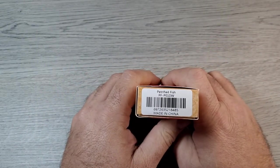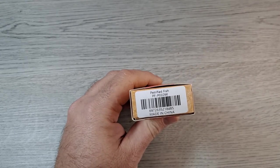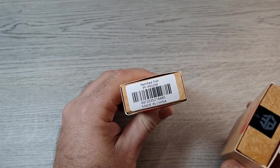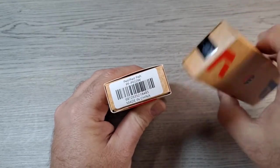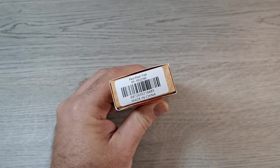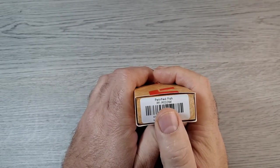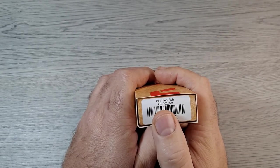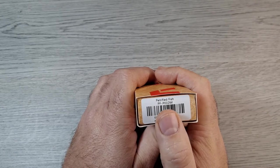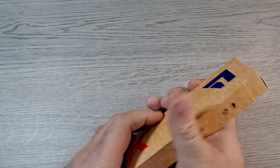This one actually has a sticker on it. The other one I got which came directly from the manufacturer did not have any identification of what knife it was. You can see Petrified Fish PF P01 or P01 DW. Let's get this open.